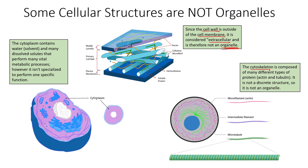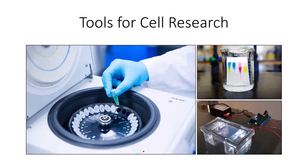The last structure not considered an organelle is the cytoskeleton. The cytoskeleton is composed of many different types of protein — actin and tubulin. Actin creates microfilaments and intermediate filaments, while tubulin makes microtubules. The cytoskeleton is not a discrete structure, so it is not an organelle. However, like the cell wall and cytoplasm, it is vital to the existence of the cell, providing shape, structure, and support.